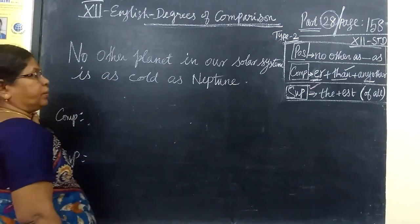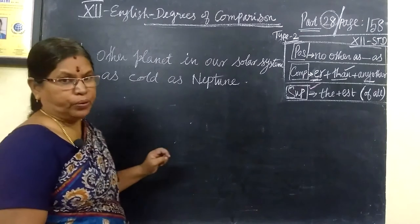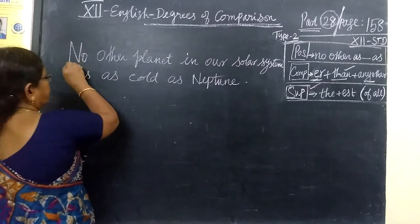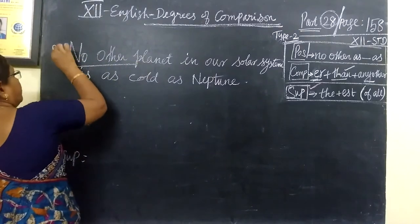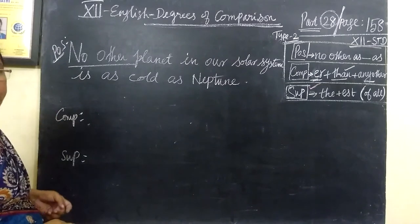So, 'no other planet in our solar system is as cold as Neptune.' What is given is 'no other,' so what is given is positive degree. Then comparative or superlative.